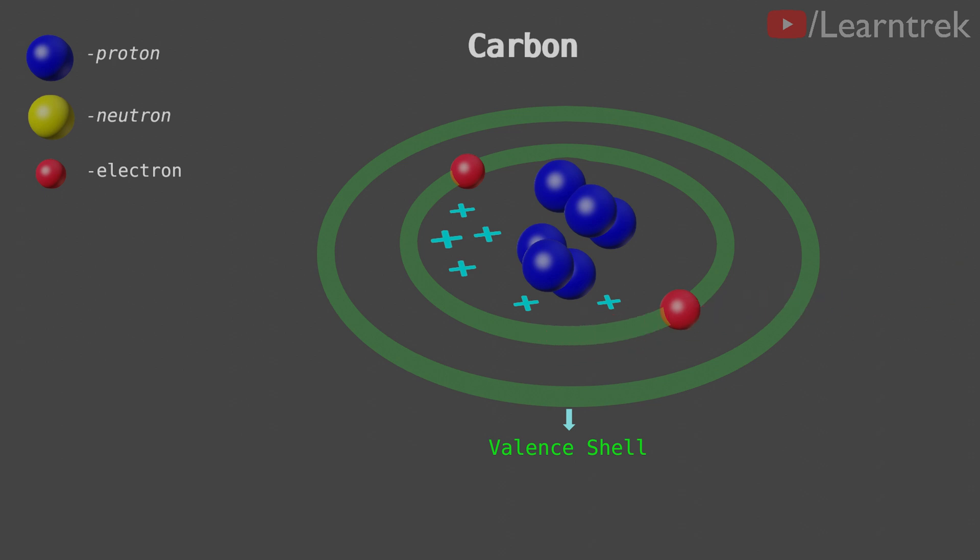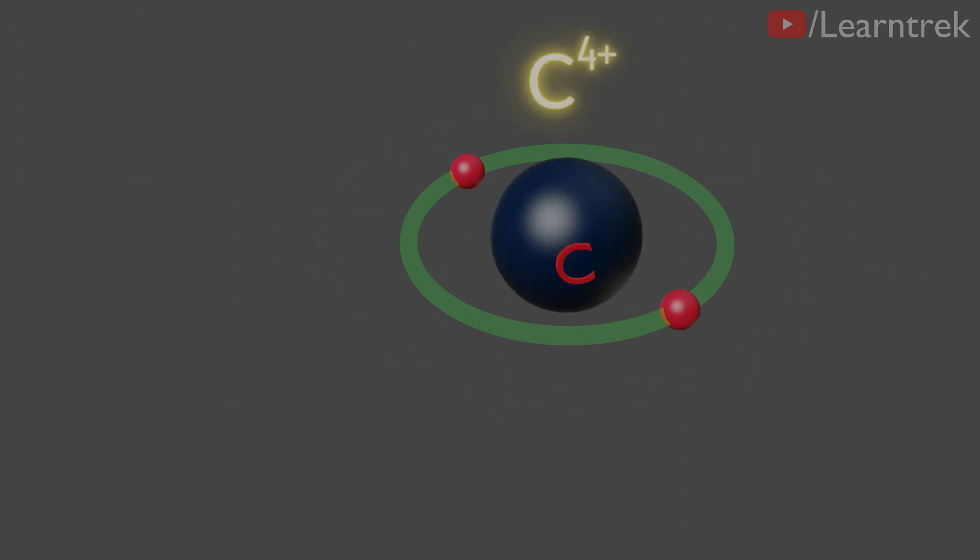However, if all four valence shell electrons are removed, then carbon will become a C4-positive cation.